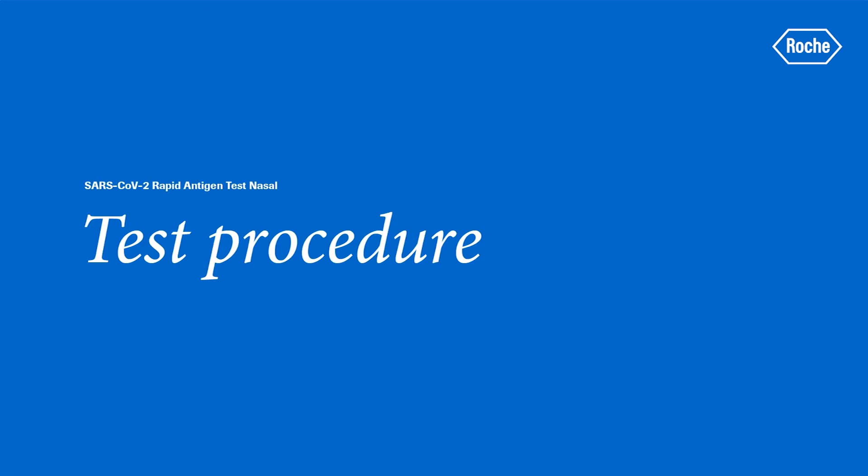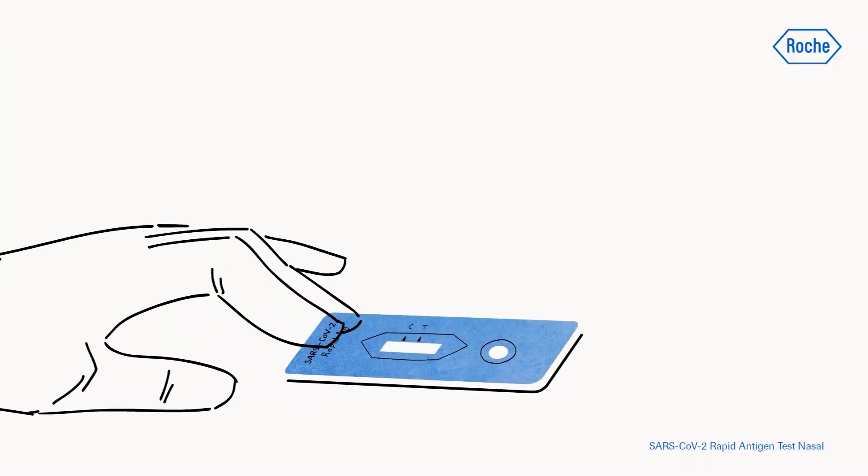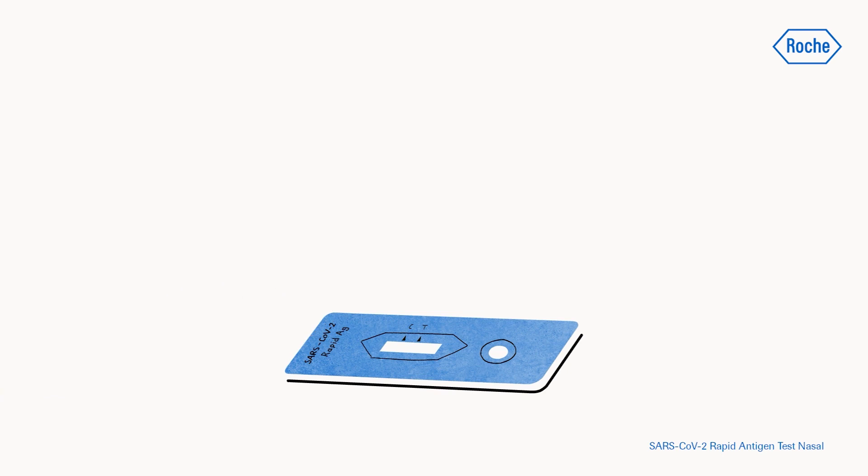Here's how to proceed with the sample. Place the test device on a flat surface. Turn the tube and apply four drops of extracted sample at a 90 degree angle to the specimen well of the test device.